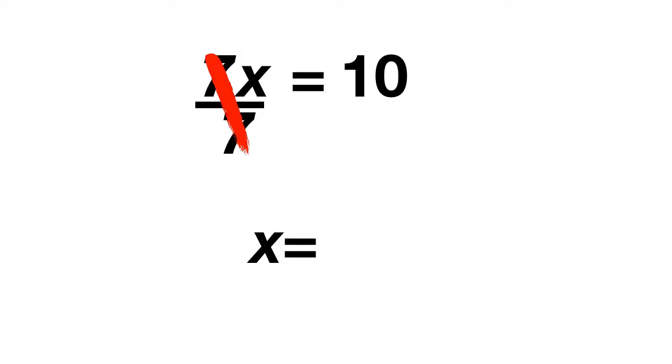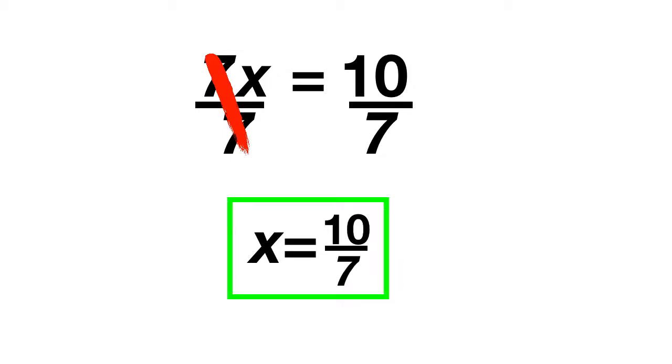But what do we have to do now? We have to do the same thing to the other side, so we end up with 10 divided by 7. Now don't worry, we're not actually going to have to do any complicated division. Because we've written this in fraction form, we can just take this as our answer. x is equal to 10 sevenths.